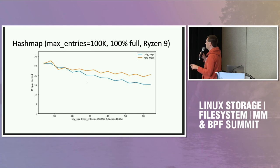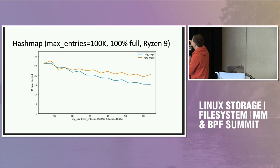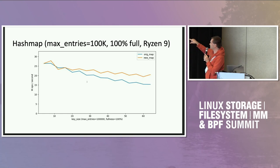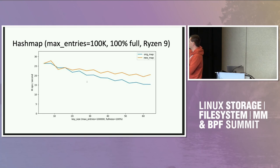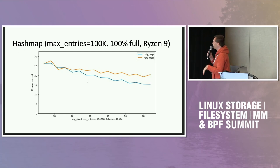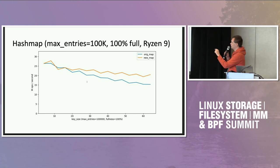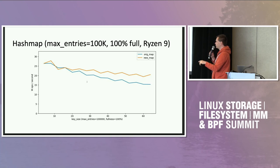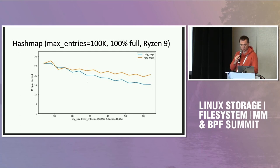This is a map of 100k entries, 100% full — the worst case. The x-axis is key size. For smaller keys, jhash actually outperforms xxh3 here. On different architectures, the plot at the beginning differs — we win on AMD for some keys, on Intel for others. But they start to converge across all architectures at about key size 28, so 32 is a good threshold to use xxh3.